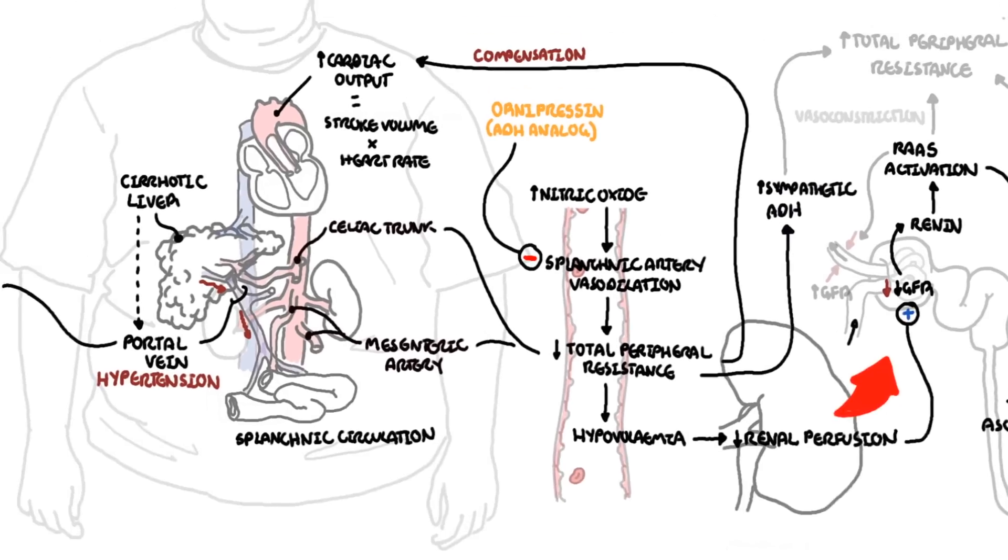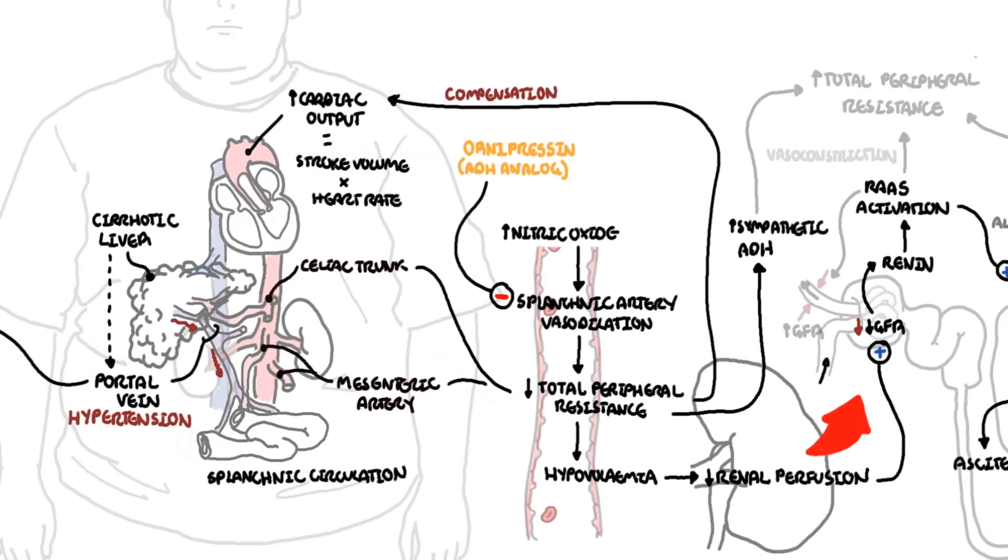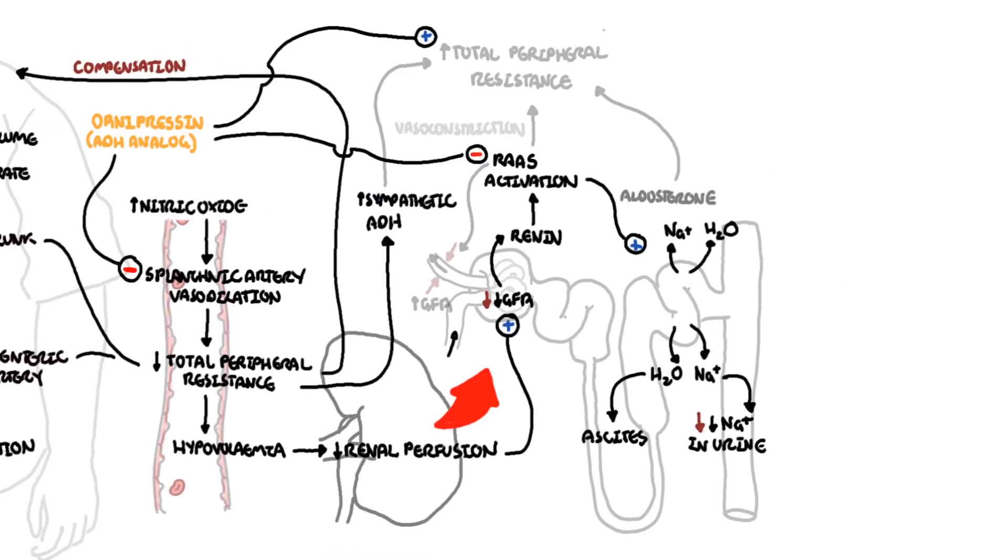Administration of ornipressin partially corrects many of the systemic and renal hemodynamic abnormalities that are present. These include increasing the mean arterial pressure, reducing plasma renin activity, as well as adrenaline and noradrenaline concentration. Ornipressin increases renal blood flow, increases glomerular filtration, as well as increasing urinary sodium excretion and volume.